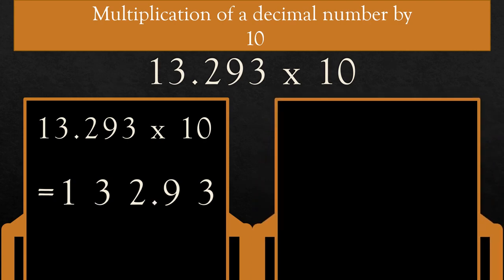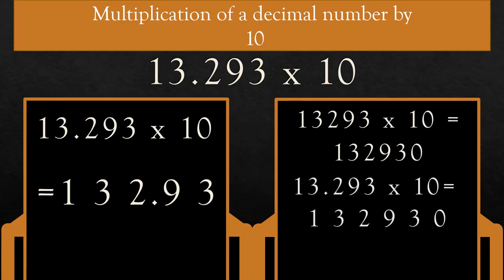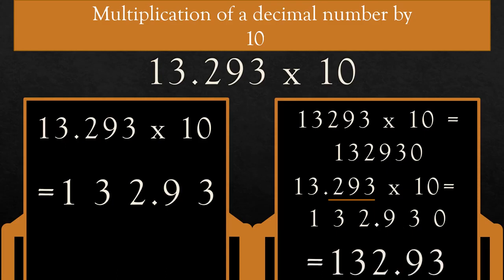Another way: multiply 13.293 × 10, ignoring the decimal point. Everyone knows 13,293 × 10 is equal to 132,930. Now, how many digits after the decimal in 13.293? 3. So count 3 digits from the right — 1, 2, 3 — and place the decimal in the product. So the answer is 132.93.